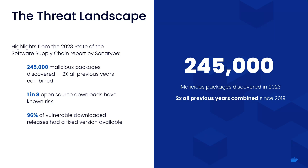Just like in physical supply chains, where manufacturing relies on raw materials and parts sourced from various suppliers, software developers usually rely on third-party dependencies and open-source software to build their applications. This reliance involves implicit trust in the security and integrity of those external components. For instance, just as a faulty component can compromise a product, a malicious or vulnerable Docker container image or an open-source library can lead to the compromise of your application.